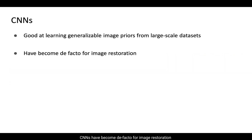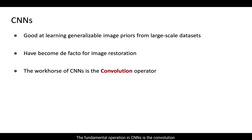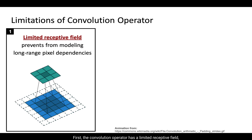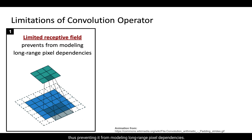CNNs have become de facto for image restoration, as they can learn generalizable image priors from large-scale datasets. The fundamental operation in CNNs is the convolution, which provides local connectivity and translation equivalence. But it causes two main issues. First, the convolution operator has a limited receptive field, thus preventing it from modeling long-range pixel dependencies.